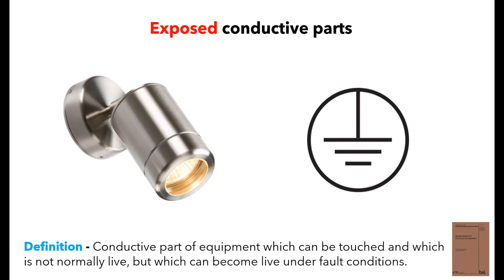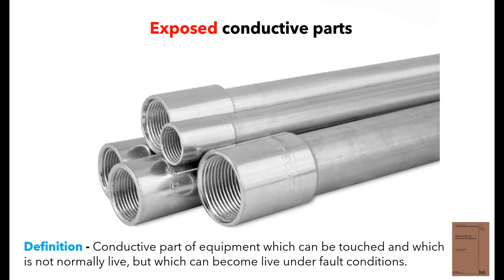BS7671 gives the definition of a conductive part. An example of this would be a class 1 light fitting, which would have the following symbol to show that the fitting needs to be earthed, or something like metal containment used in the installation of electrical circuits.